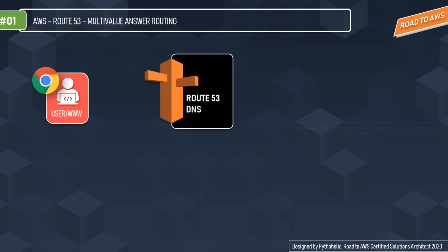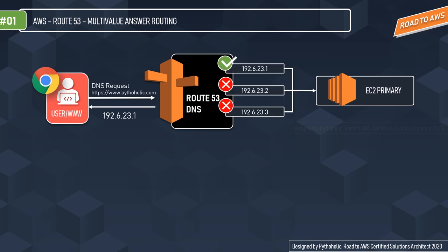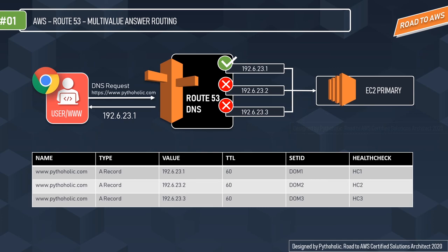In the example, a user's browser accesses an EC2 instance serving the application via Route 53 with multi-value answer routing applied. The same domain name can have multiple A records. When the user makes a request, Route 53 checks which address is currently healthy — for example, 192.6.23.1 — and returns it. Looking at the record table, we have DNS name, record type A, multiple IPs, TTL set to 60 seconds, and health check IDs for monitoring.